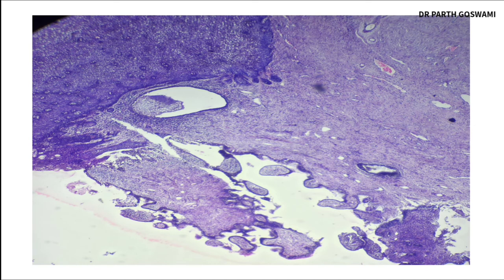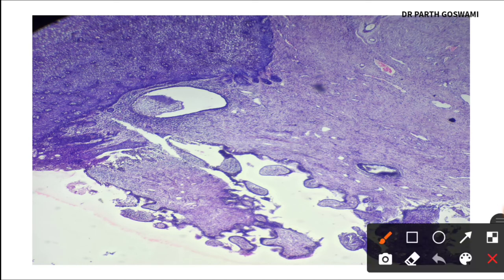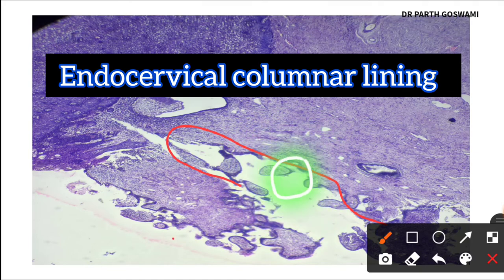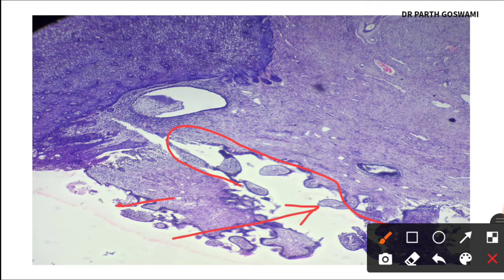This particular diagram demonstrates papillary endocervicitis. The epithelial lining — consisting of columnar epithelium — is visible along the surface. These finger-like projections are the papillae. Below the papillae is the stroma, which is totally free with no invasion of glands into the stroma.